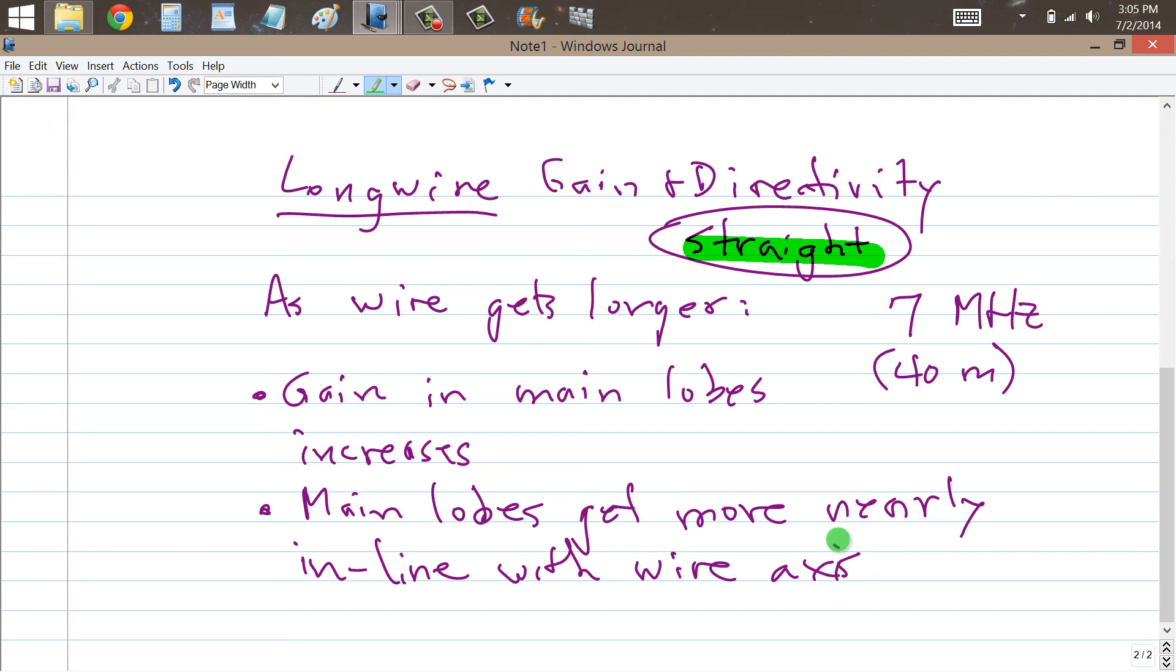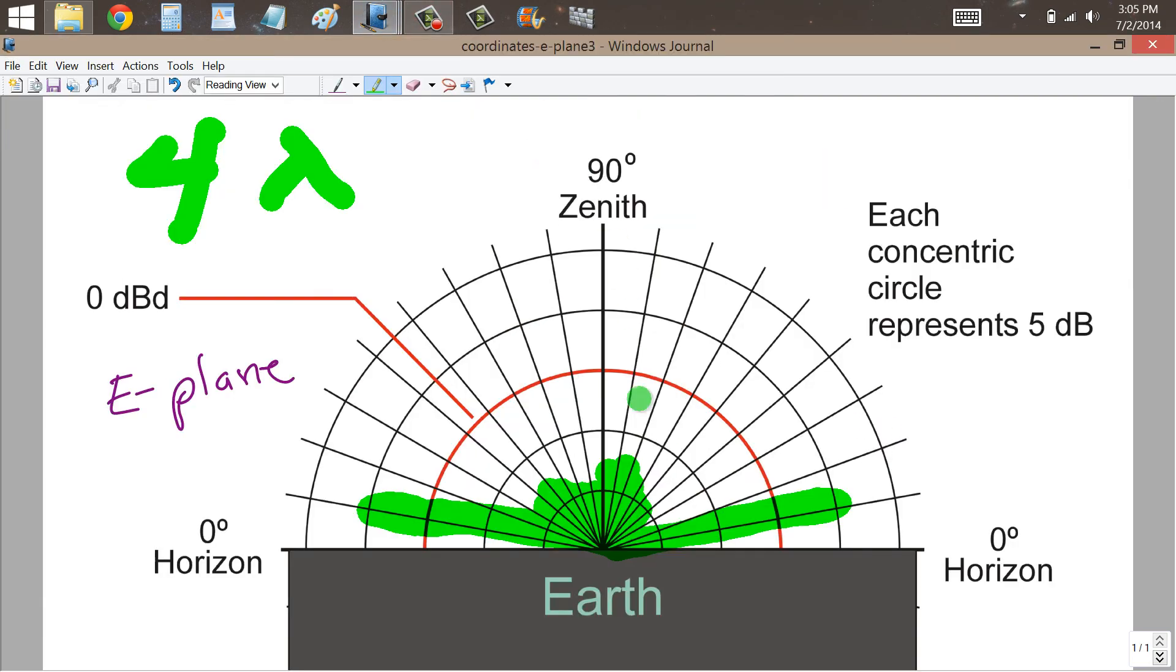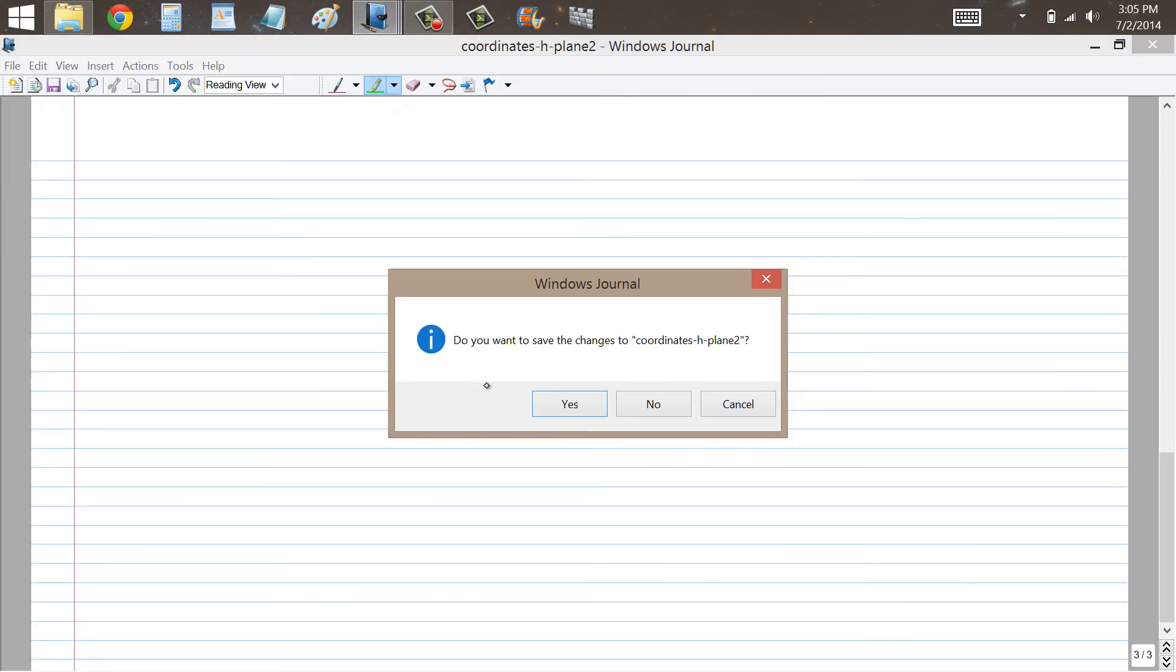And that will explain the phenomenon that I observed with a four wavelength wire at 7 MHz, which was about 500 feet long, flown with a parafoil kite. The main lobe was quite sharp, probably something like that. I am not really certain exactly what these angles are.